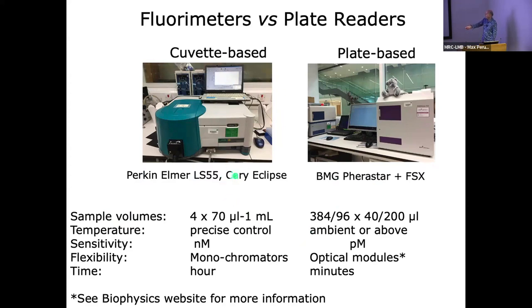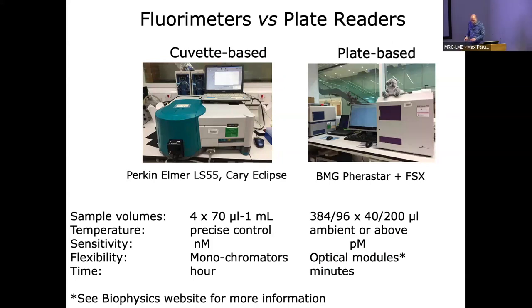We've got lots of different types of fluorimeters and plate readers. For the fluorimeter, we need a lot more sample but it's got much better control in terms of temperature and flexibility with monochromators. For plate readers, you can multiplex and use very small volumes - it's very sensitive - but we are a bit limited because it uses optical modules, so you have to select what the excitation and emission wavelengths are.